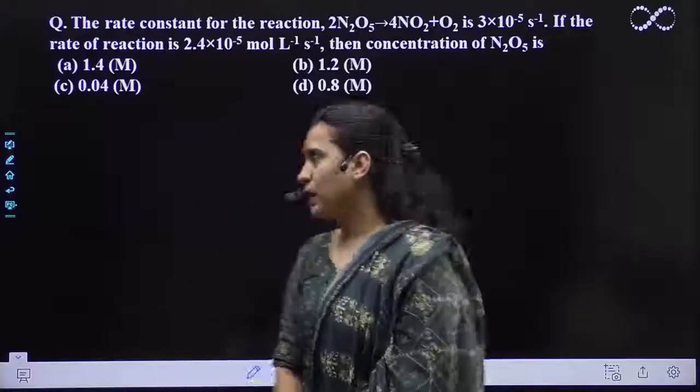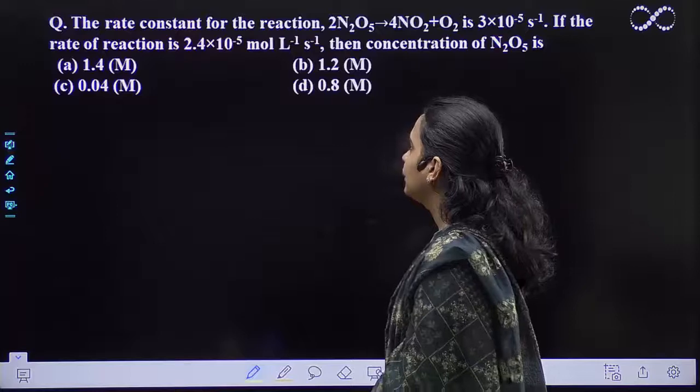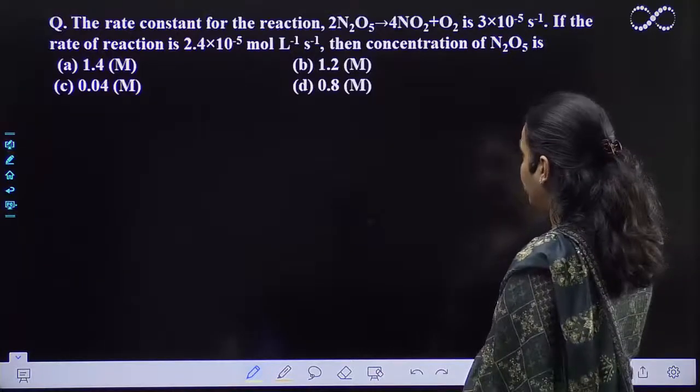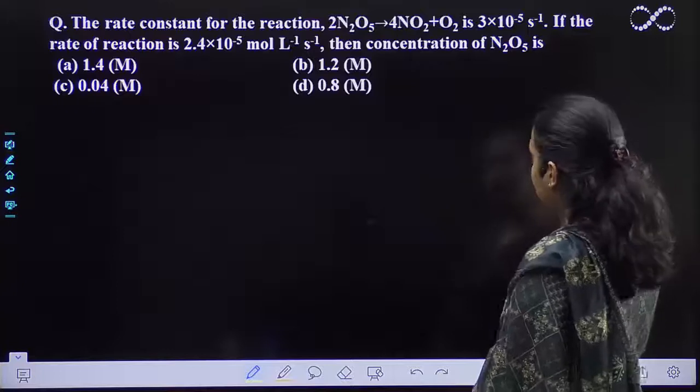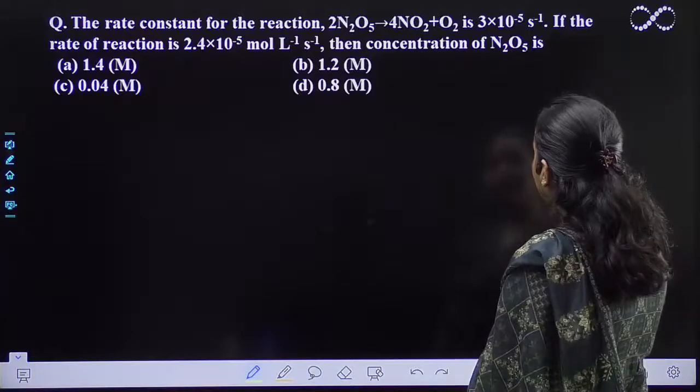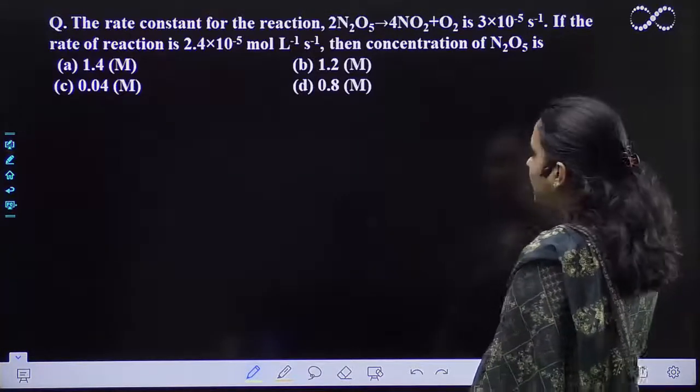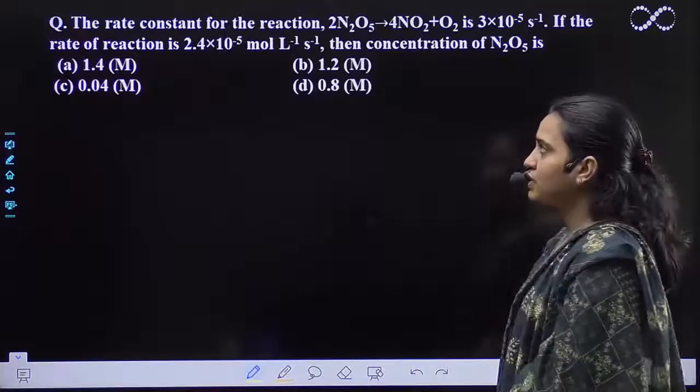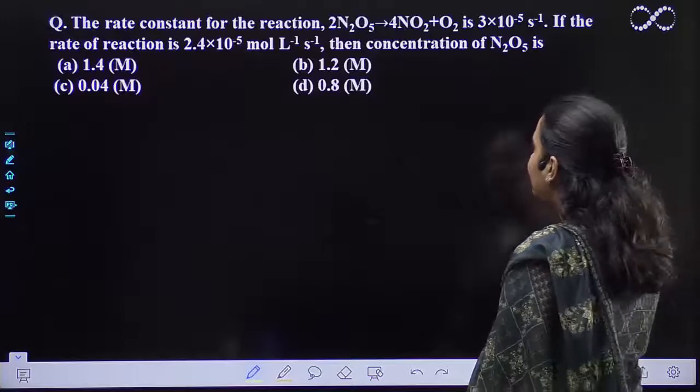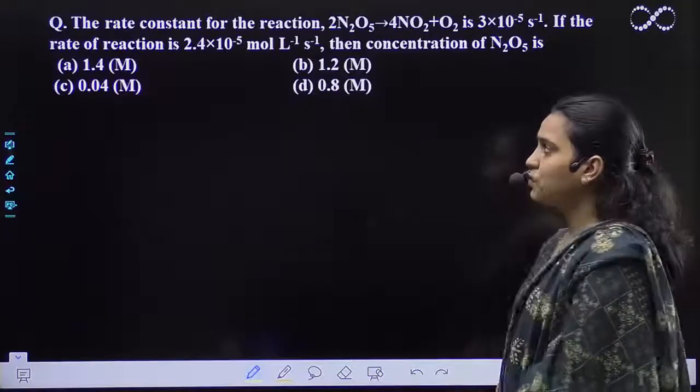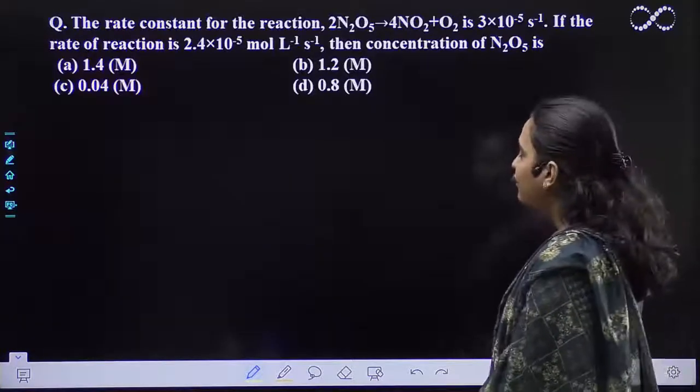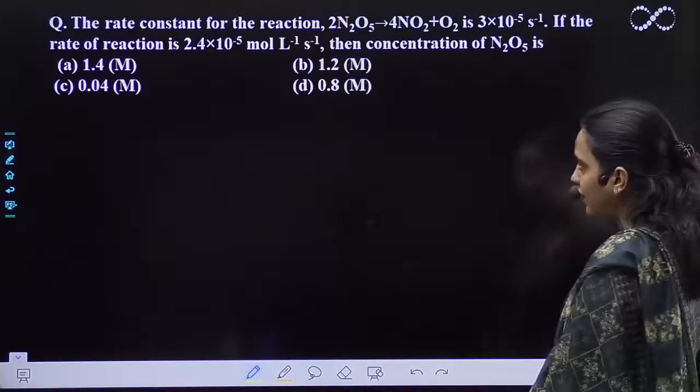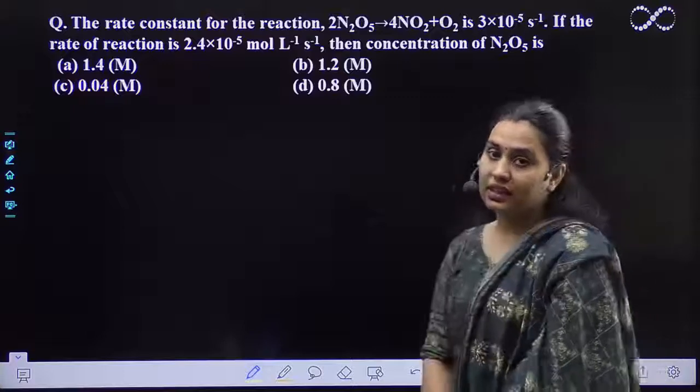Hello students, so the question is saying the rate constant for the reaction 2N2O5 gives 4NO2 plus O2 is 3×10^-5 s^-1. If the rate of reaction is 2.4×10^-5 mol L^-1 s^-1, then concentration of N2O5 is—you have to find out the concentration of N2O5 by the rate law.